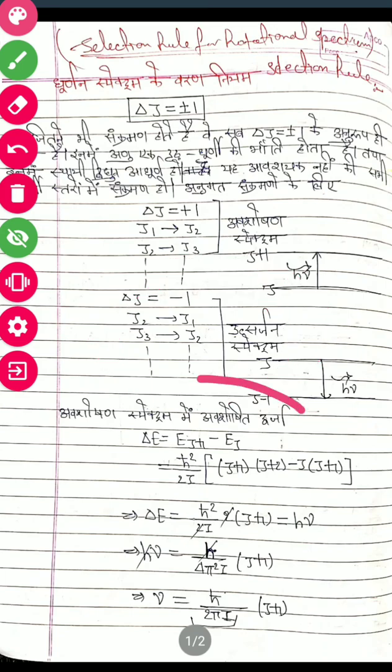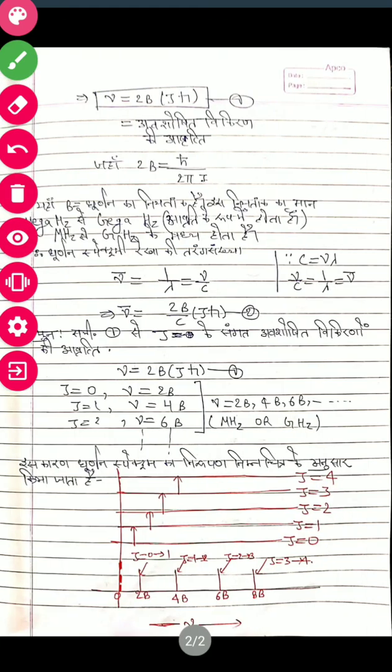Absorption spectrum: the energy delta E equals E(J+1) minus E(J). We get the value of nu that is equal to h-bar upon 2π I times J(J+1). Now continue the derivation.